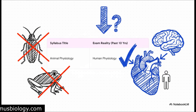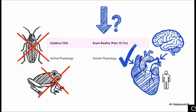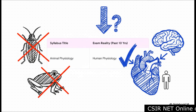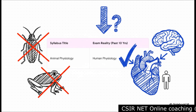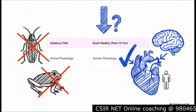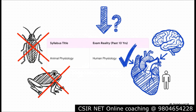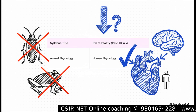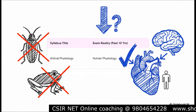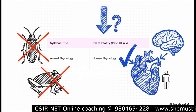When you actually analyze the last decade of CSIR Net papers, a pattern emerges that is crystal clear. The questions are not about the excretory system of a cockroach or a frog. They are overwhelmingly — almost exclusively — focused on human physiology. So the first and most important thing you need to do is completely reframe this unit in your mind. Forget animal physiology. You are studying human physiology. Period.